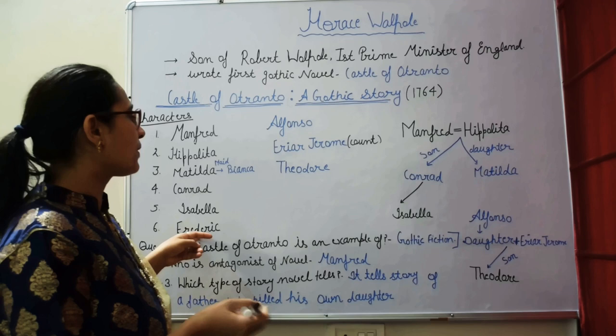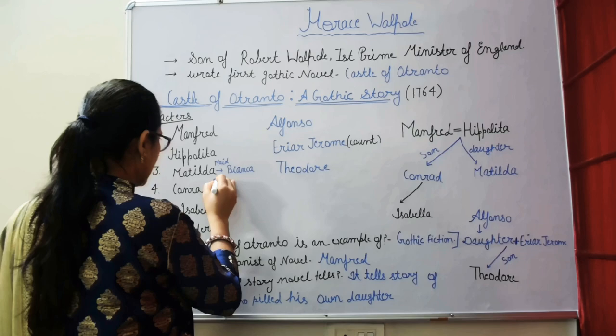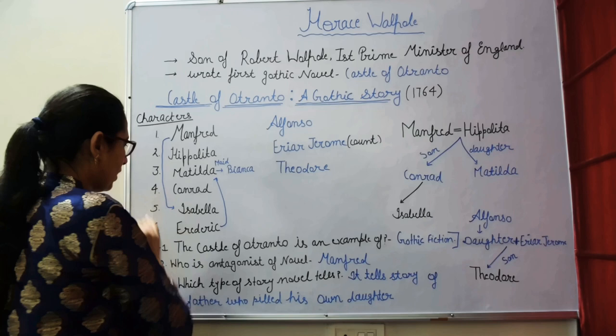Manfred accuses Theodore of hiding with his daughter Mathilda. Frederick also arrives and Manfred says he will give Isabella to Frederick, and Frederick will give Mathilda to Manfred.